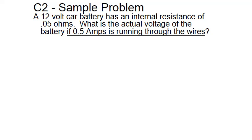Let's take a look at a situation. We have a 12-volt car battery with an internal resistance of 0.5 ohms. What is the actual voltage of the battery if 0.5 amps is running through the wires?